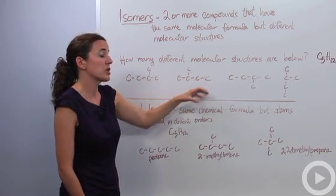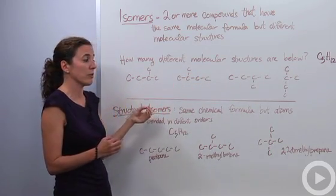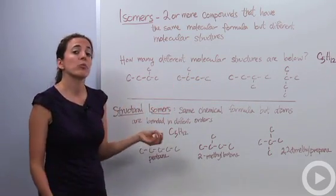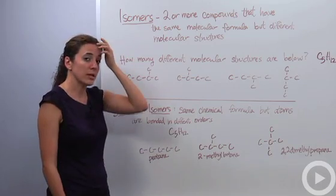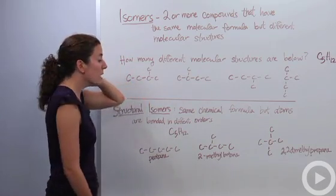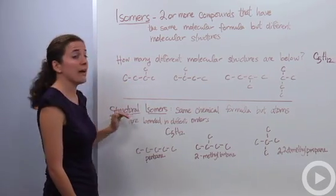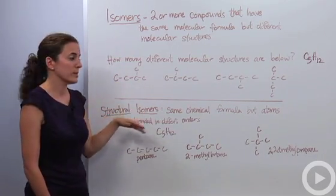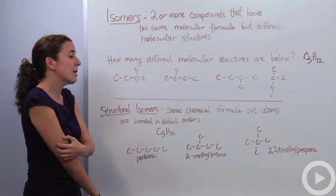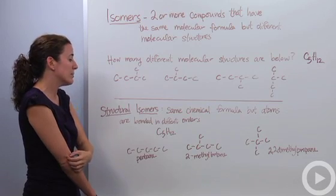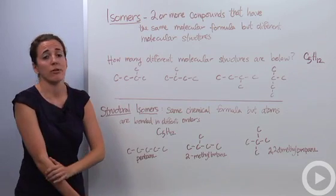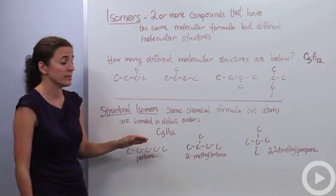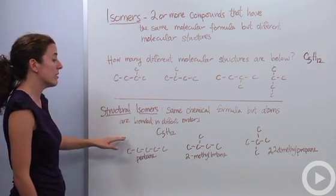Isomers are actually different molecules of the same molecular formula. The first type you're going to see are structural isomers — these have the same chemical formula, but atoms are bonded in different orders. This is probably one you're going to see in class most often.